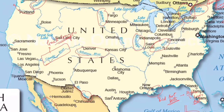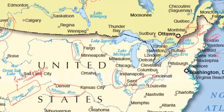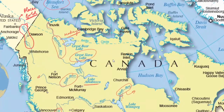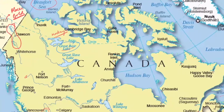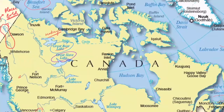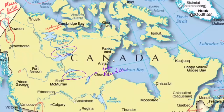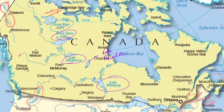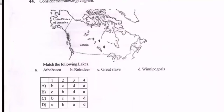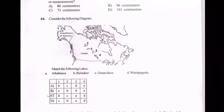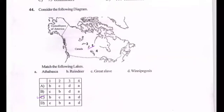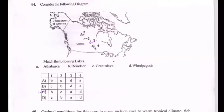Now let's look at some lakes. Canada's lakes include Great Bear Lake, Great Slave Lake, Lake Athabasca, Lake Reindeer, and Lake Winnipeg. A question on these lakes appeared in the UPSC 2021 prelims exam — it asked which lake matches which description, and the obvious answer was option C. Studying mapping this way will help you answer such questions.